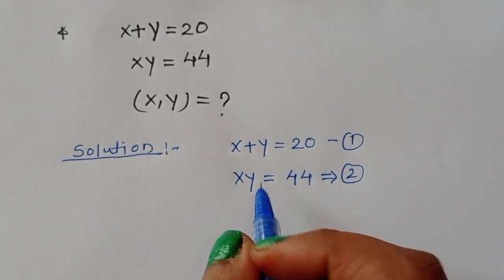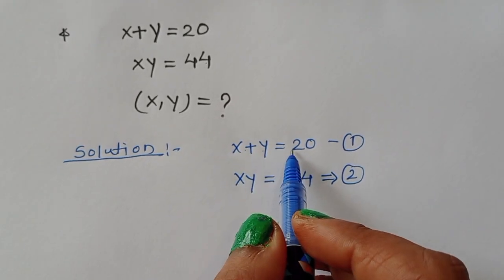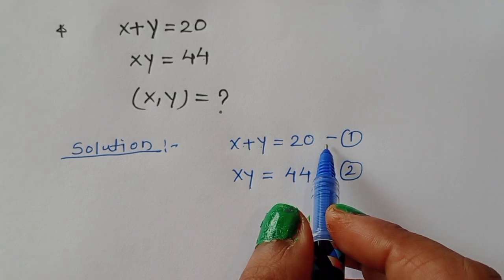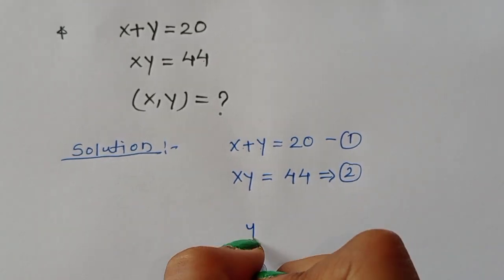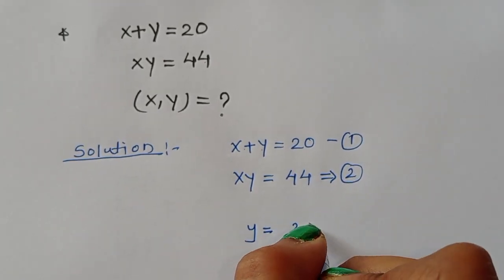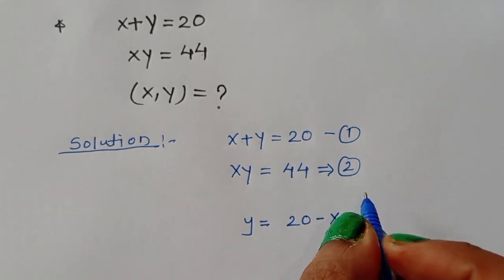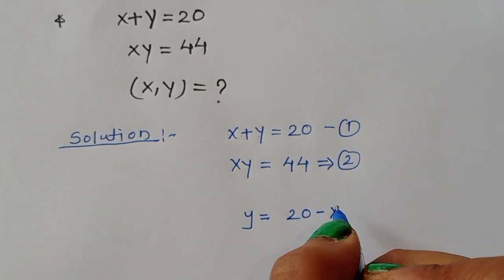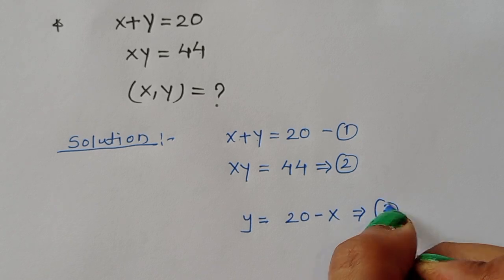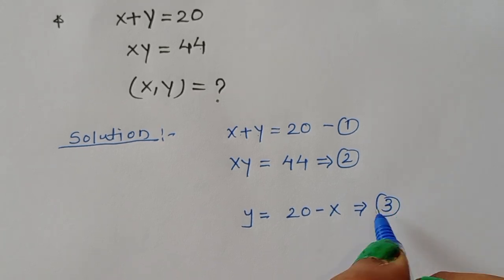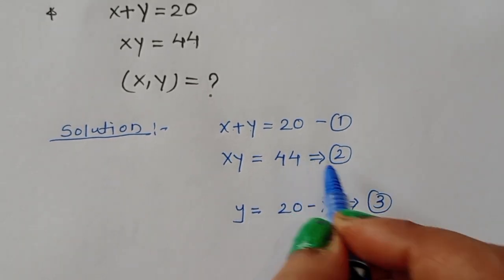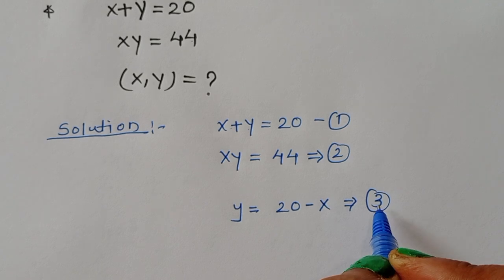From equation 1, we can write y is equal to 20 minus x. So y equals 20 minus x from equation 1. This is the value of y, and we call it equation number 3. Now we have to substitute the value of y in equation 2, so we substitute equation 3 into equation 2.